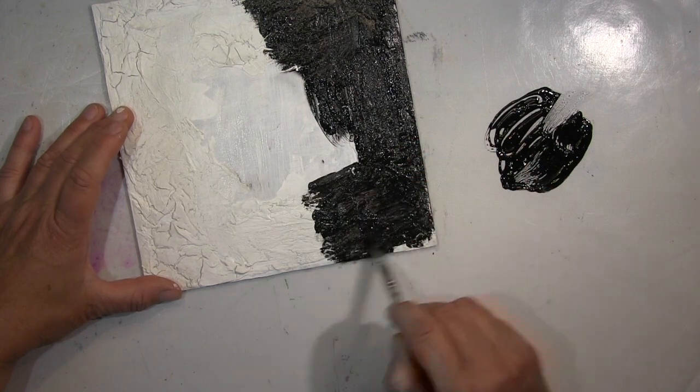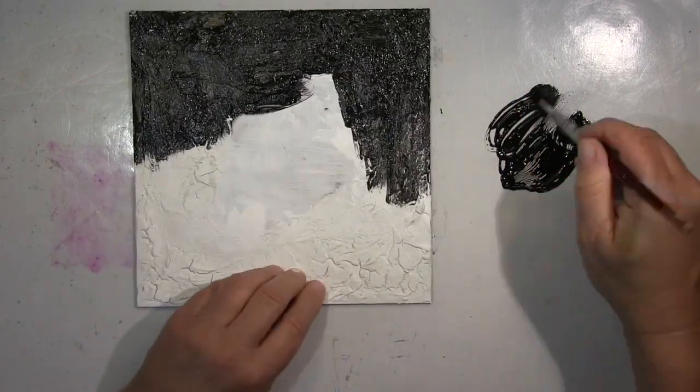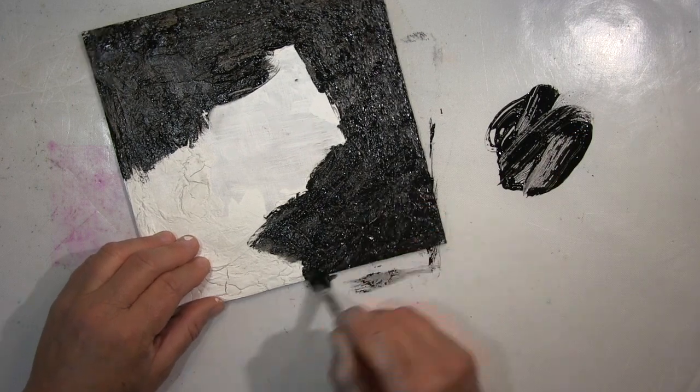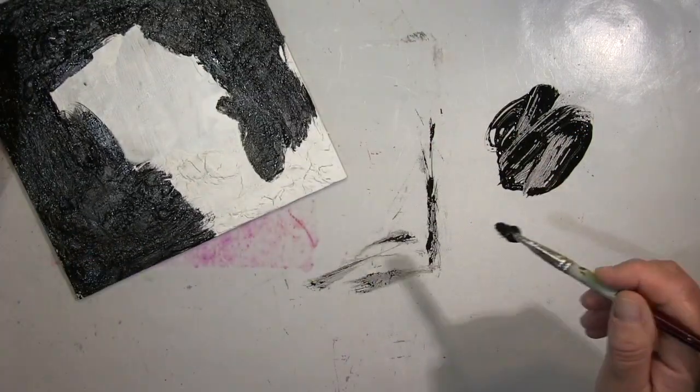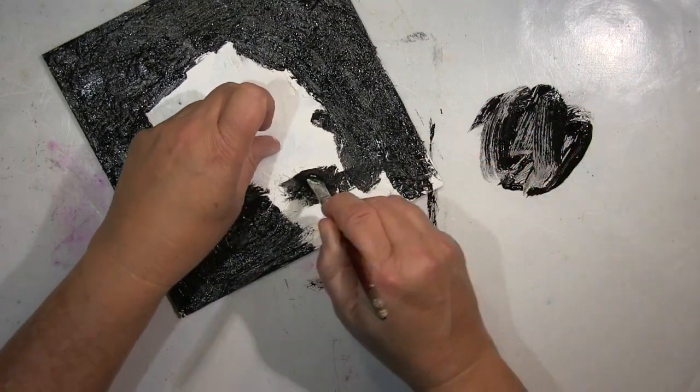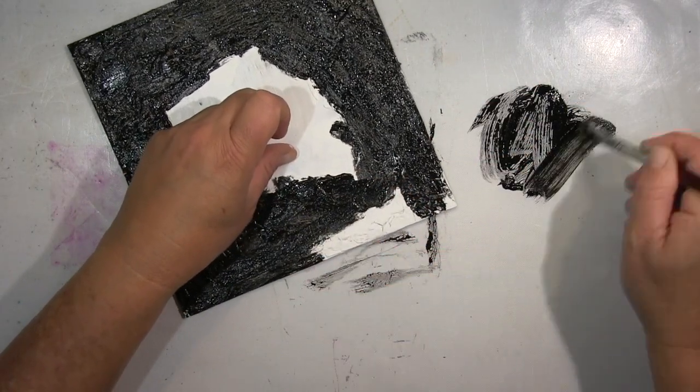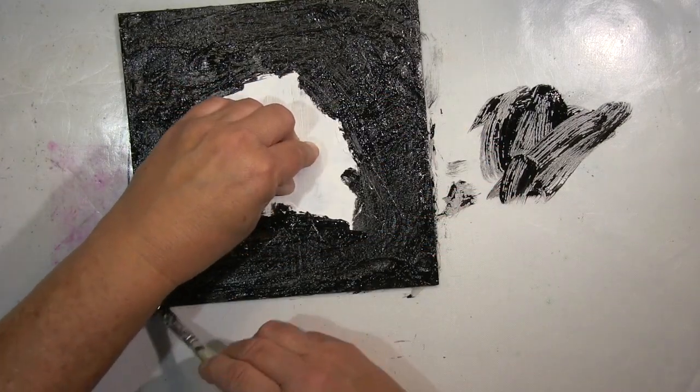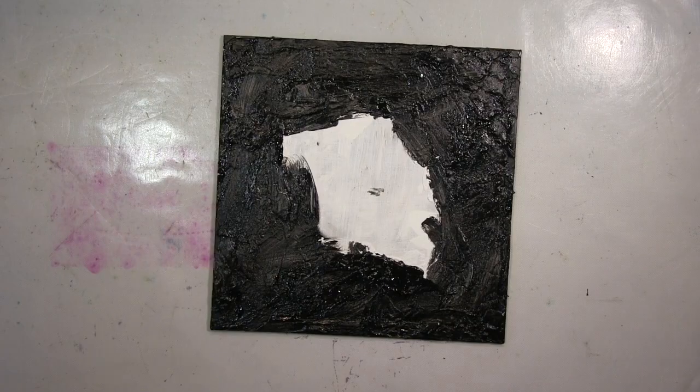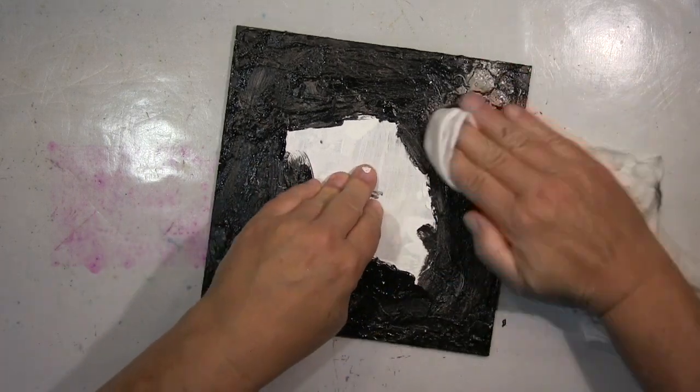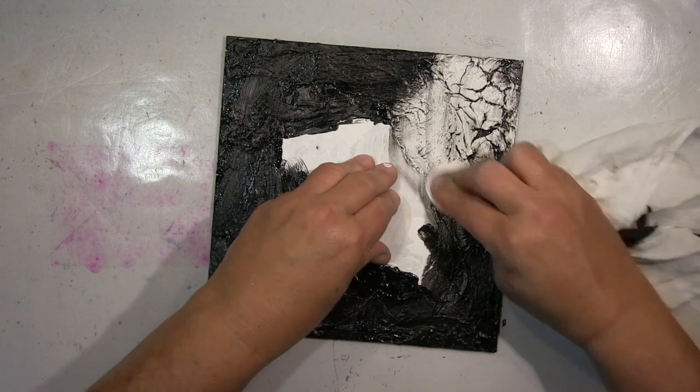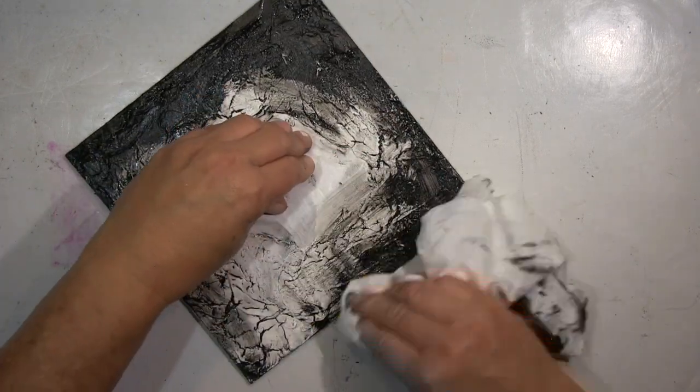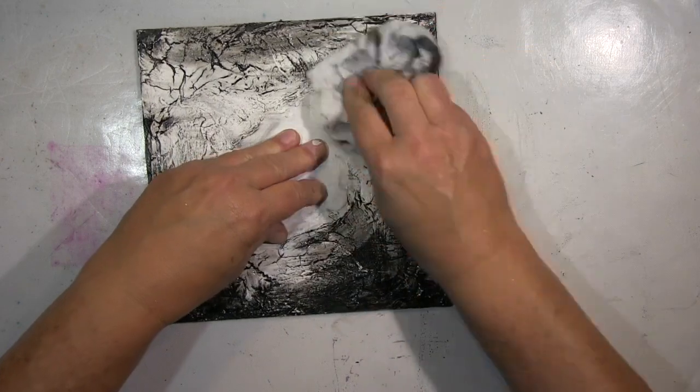Und packe dann mein Glazing drauf. Und zwar habe ich hier Glazing Medium genommen und schwarze Farbe 1 zu 1. Vermische das und packe das jetzt auf die Stellen, wo die Crackel, also diese Risse sind, weil ich eben das Schwarze in den Rissen haben will und nicht auf der Oberfläche. Einfach, um die Risse auch noch ein bisschen hervorzuheben. You know, I'm using here a Glazing Medium 1 to 1 with black acrylic paint. And I put it on top over the Crackles, because I only want to have it in the Crackles. I leave it to dry a bit. It shouldn't dry completely, because I want to remove it from the surface. It should stay in the Crackles, but be removable on the top.